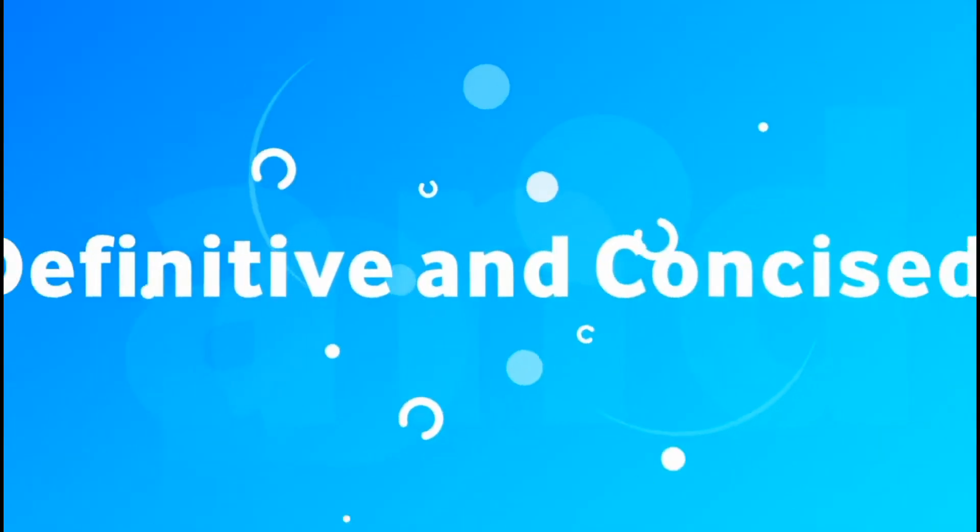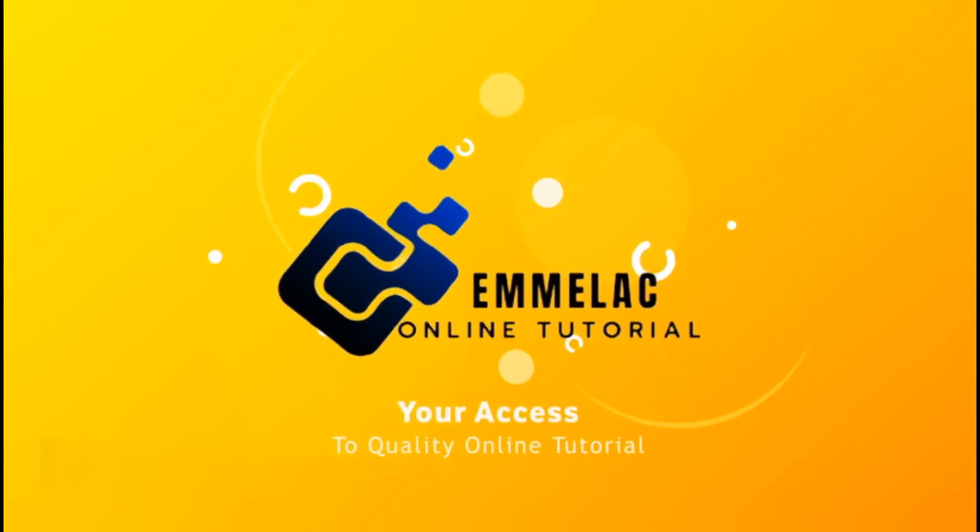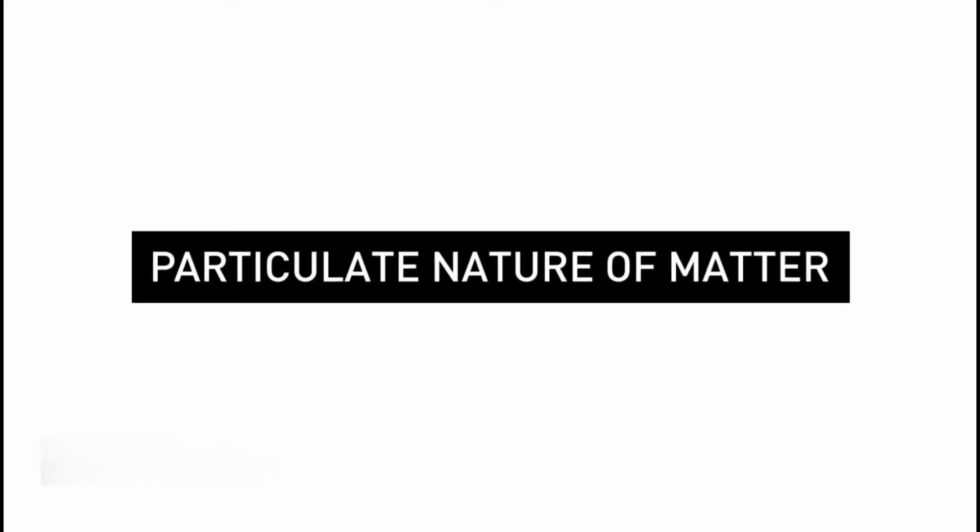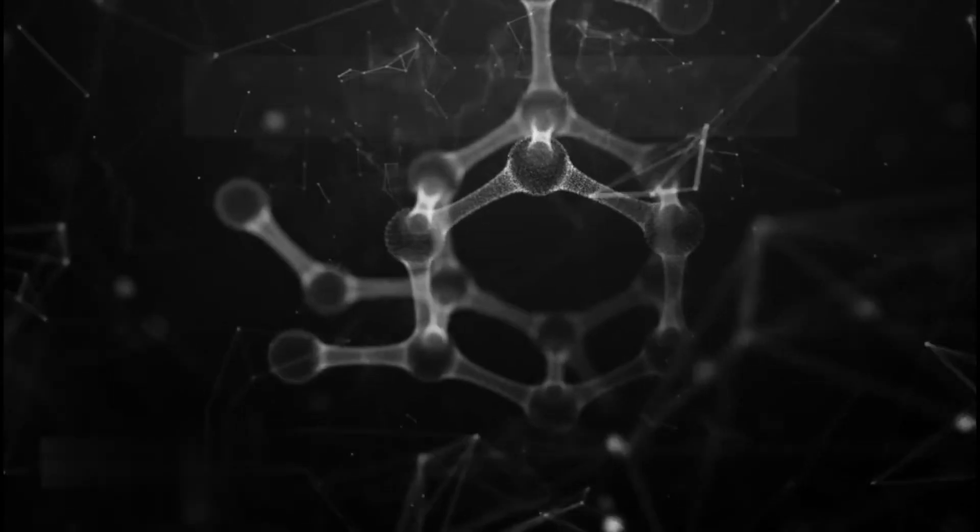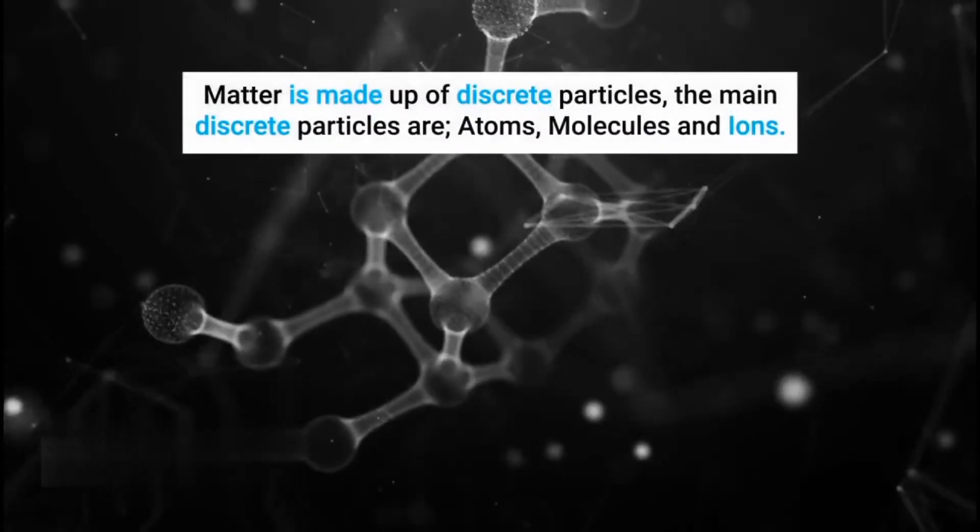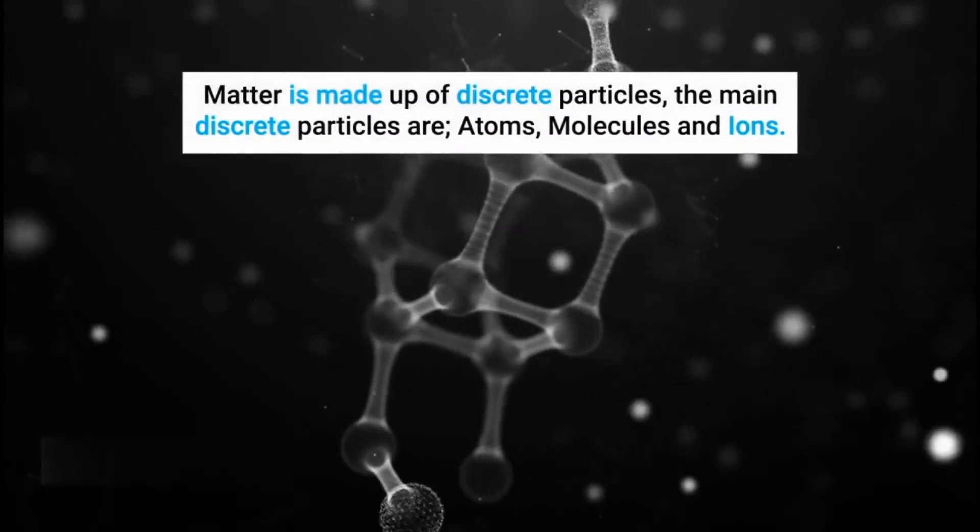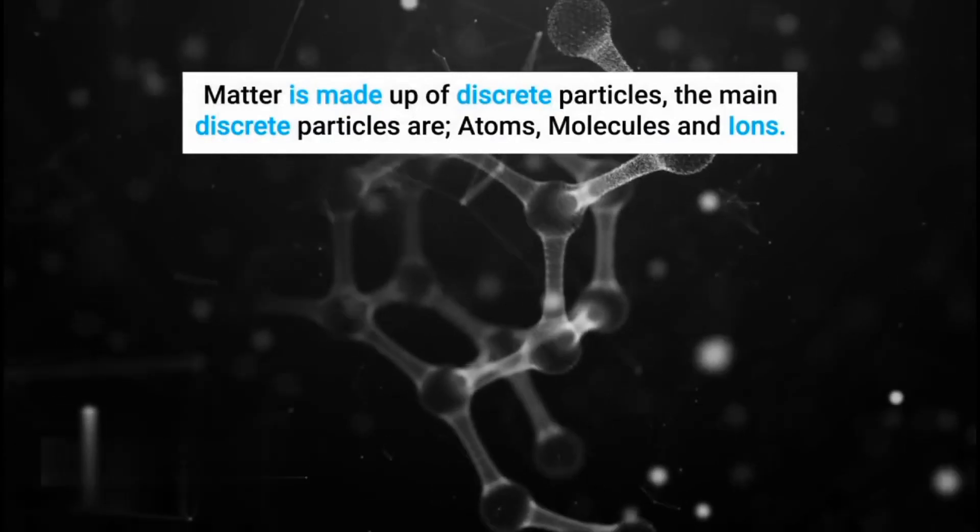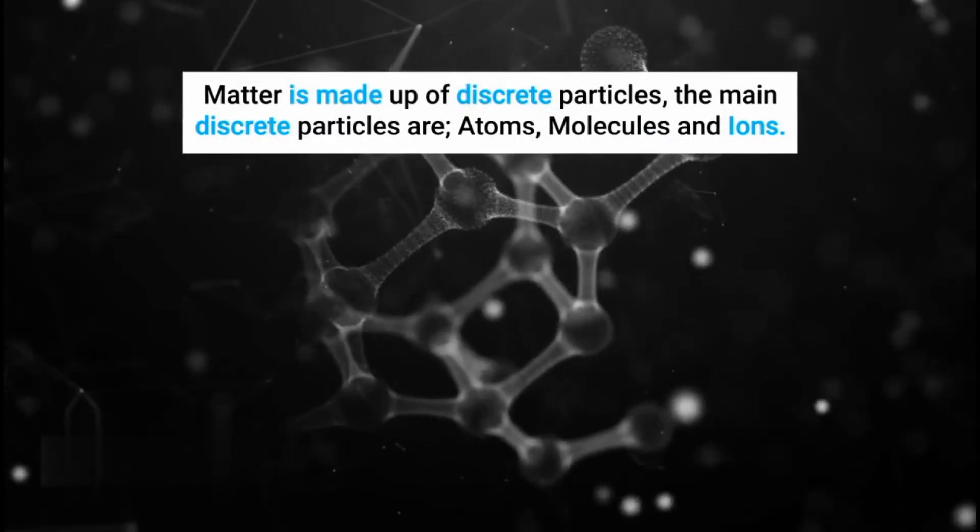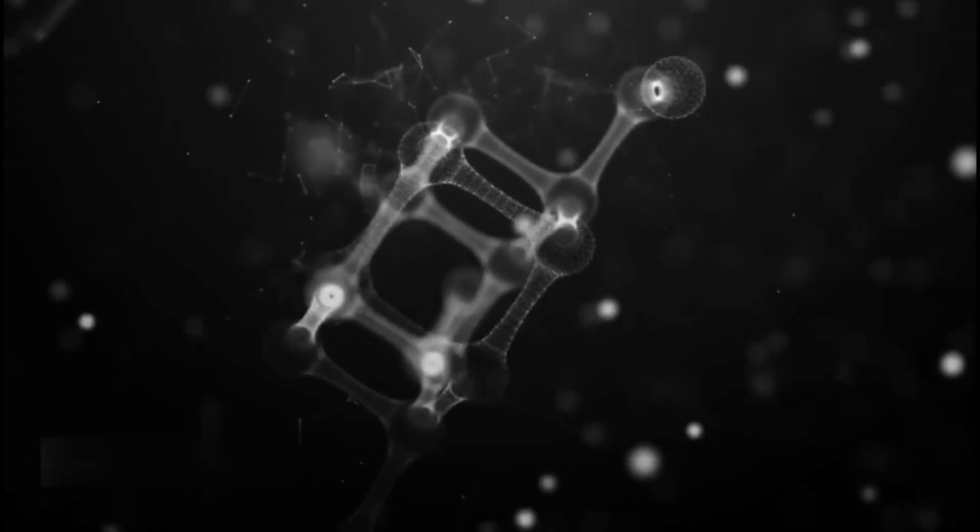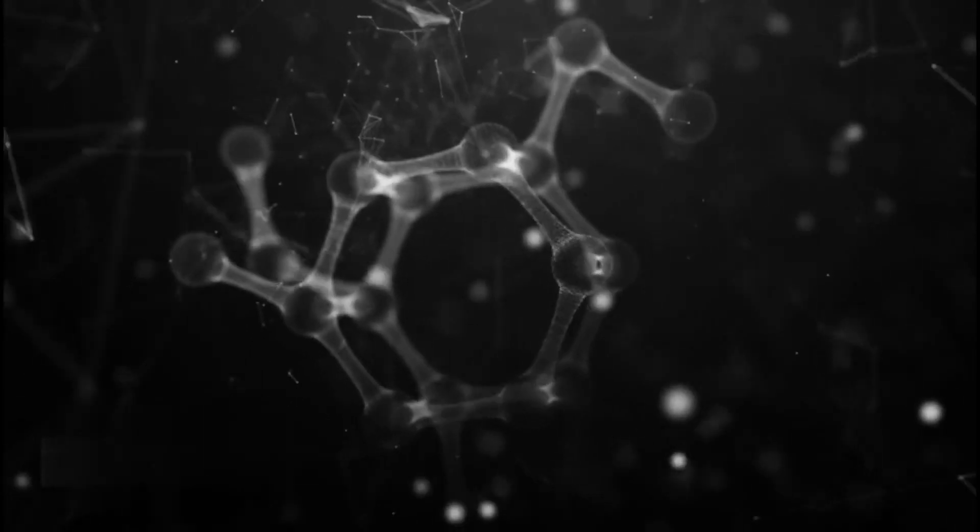We're talking about the particulate nature of matter, which are the particles every matter contains. Matter is made up of discrete particles. The main discrete particles are atoms, molecules, and ions, and these are the three particles we will be talking about in this video.